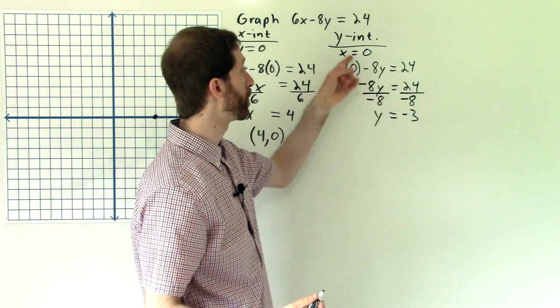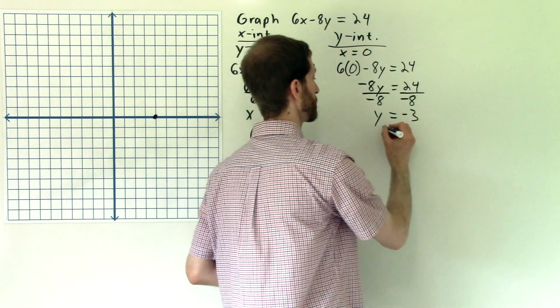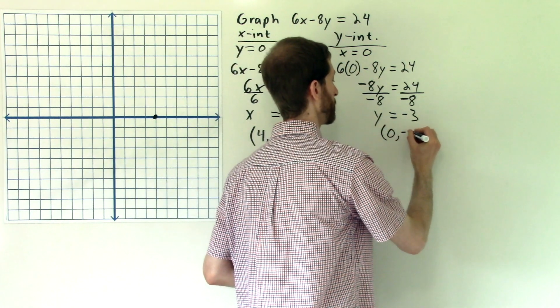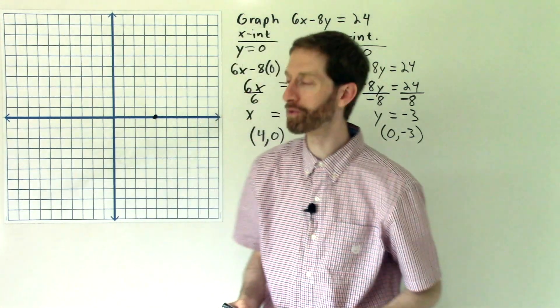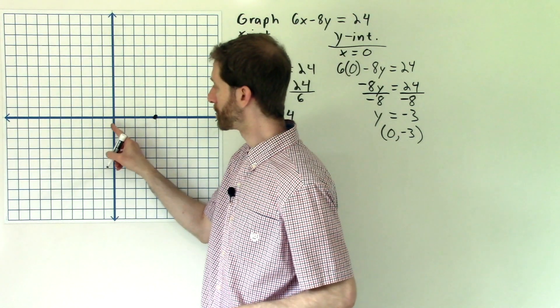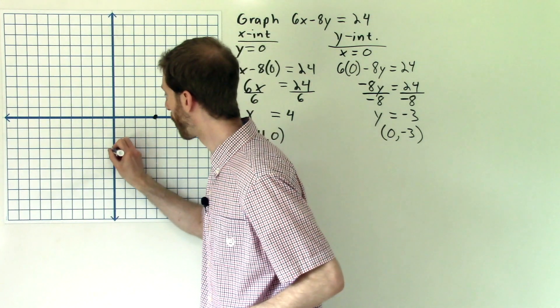Again, I like to write that as a point. We found negative 3 when x was zero. So that's the point 0, negative 3. All right, so let's graph 0, negative 3. So that's zero down 1, 2, 3.